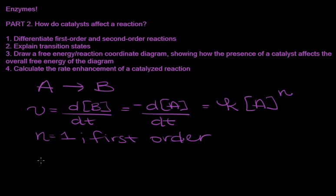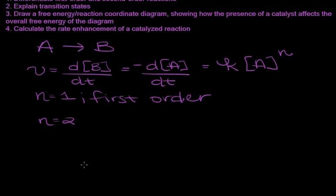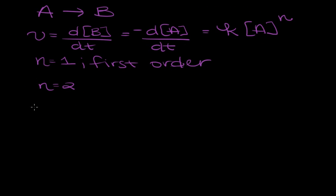Similarly, if n equals 2, if we have two molecules, for example A plus B making C, then this would be a second-order reaction because we either have two moles of one thing or two separate molecules becoming a third thing. And both of these would be second-order. And we would not see a linear decay.